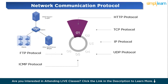The first communication protocol is HTTP. HTTP is the backbone of the internet, enabling communication between web browsers and servers. It facilitates the loading of web pages, handling requests and responses for web content. A client sends a request to the web server, the server processes it and responds with the requested web page or resource. HTTP operates on a stateless model, meaning each request is independent. It runs on port 80, while HTTPS runs on port 443.